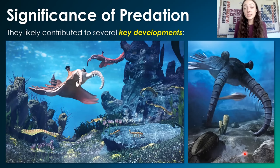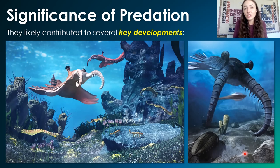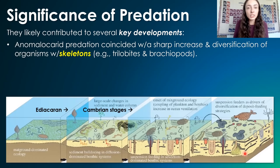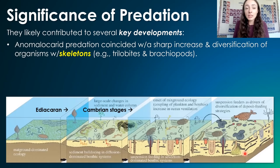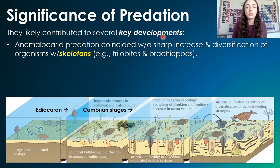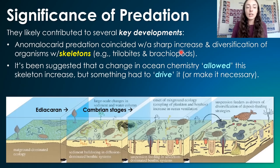So what exactly were the key developments that anomalocaridids likely played a huge role in causing? Their evolution and the time in which they were preying on other organisms coincided with the sharp increase in skeletonized organisms like trilobites and brachiopods, like we talked about earlier.